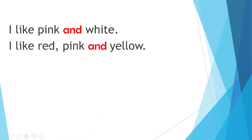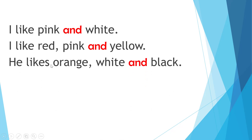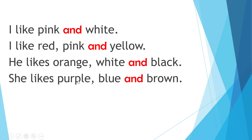I like red, pink, and yellow. Look here — we have more than two. When we have more than two, 'and' comes before the last one. Red, pink, and yellow. He likes orange, white, and black. She likes purple, blue, and brown. We put 'and' before the last one.